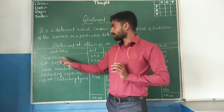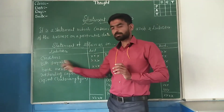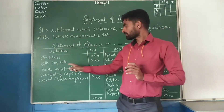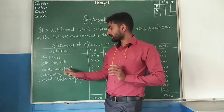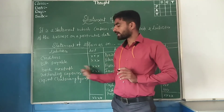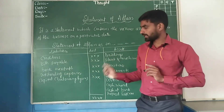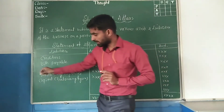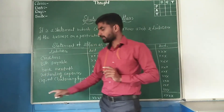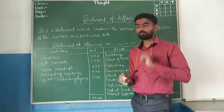On the liability side, we have: creditors, bills payable, bank overdraft, outstanding expenses. The last item is capital — capital is self-balancing on this side.